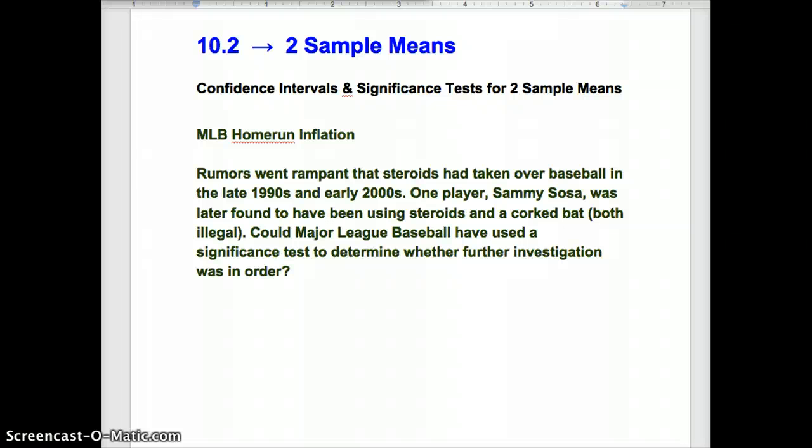There are a lot of rumors about steroids taking over baseball as home run totals skyrocketed. One player, Sammy Sosa, he was battling Mark McGuire for the home run record prior to the time when Barry Bonds broke the record for one season. They were both hitting far more home runs than they had before. Later on, it was found that Sosa had been using steroids and a corked bat, or supposedly had been using steroids and a corked bat. The bat broke, and they found cork in it, which helps you hit the ball further. Could Major League Baseball have used a significance test in order to determine whether further investigation was in order?